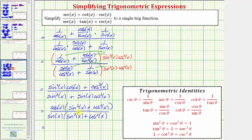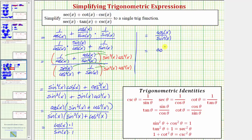From here, notice that sine squared x plus cosine squared x is equal to one, so we have cosine x times one over sine x times one, which of course is just cosine x over sine x. And cosine x over sine x is equal to cotangent x. So the given expression simplifies to the single trig function, cotangent x.